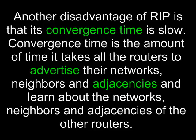Another disadvantage of RIP is that its convergence time is slow. Convergence time is the amount of time it takes all the routers to advertise their networks, neighbors, and adjacencies, and learn about the networks, neighbors, and adjacencies of the other routers.